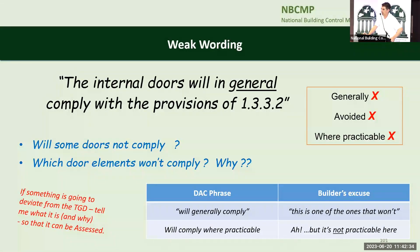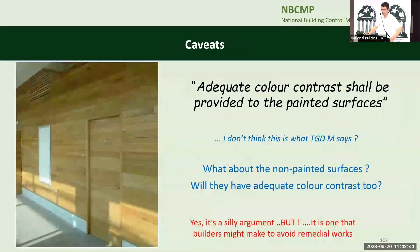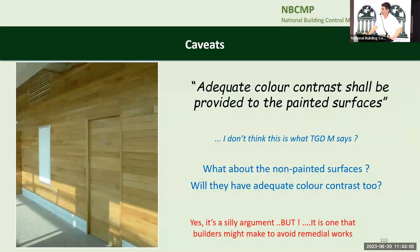Caveats: 'adequate colour contrast will be provided to the painted surfaces.' In this case it's varnished, not painted. The builder could argue the DAC only said painted surfaces, not varnished ones. I fully agree it's a stupid argument, but the builder will argue the toss on site. So it would be better if that kind of language wasn't in the report. Or unintended omissions: 'the doors would be glazed and therefore vision panels would not be provided.' Is it frosted glass? Will you be able to see through it? No — I know what the consultant meant, but that's not what they wrote.